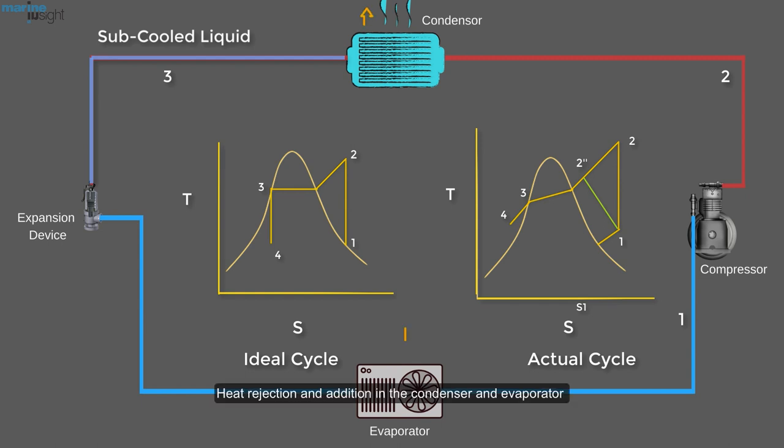Heat rejection and addition in the condenser and evaporator do not occur in constant pressure and temperature, as a result of pressure drop in the refrigerant.